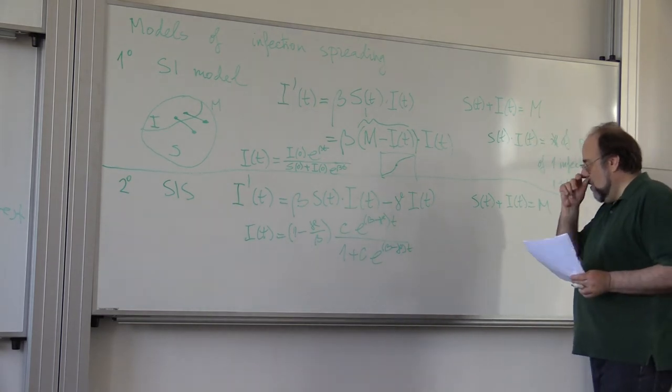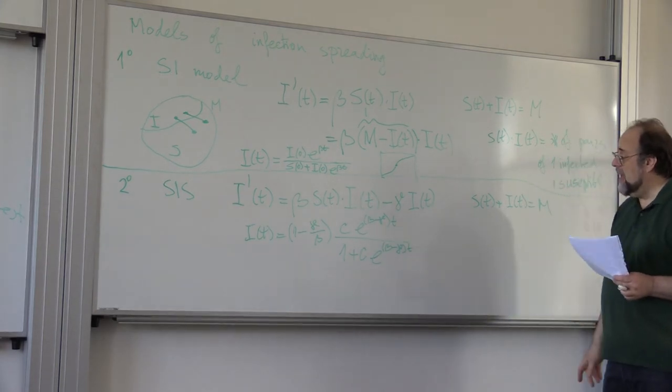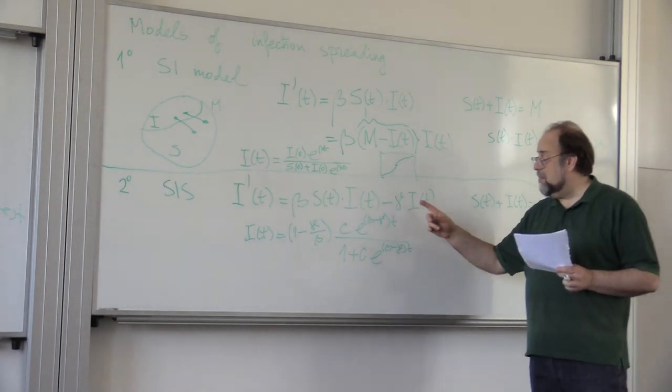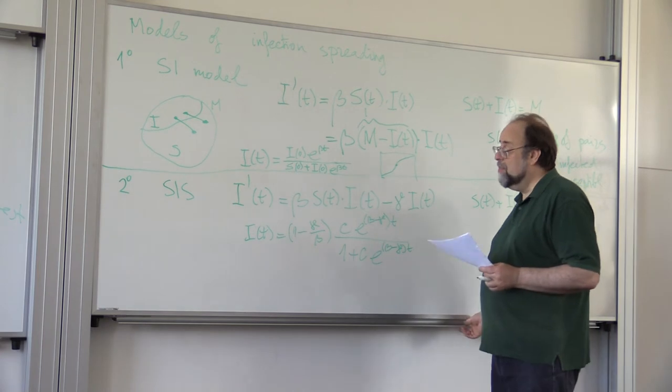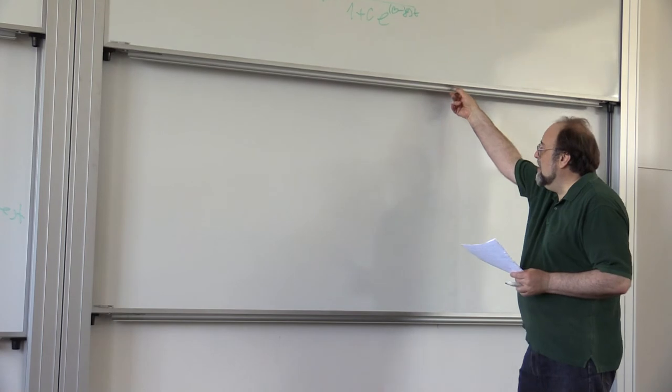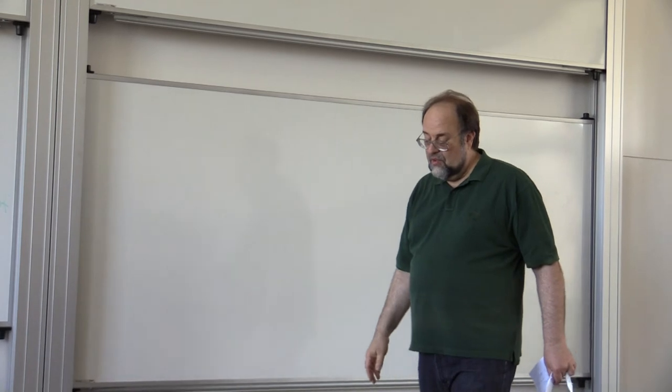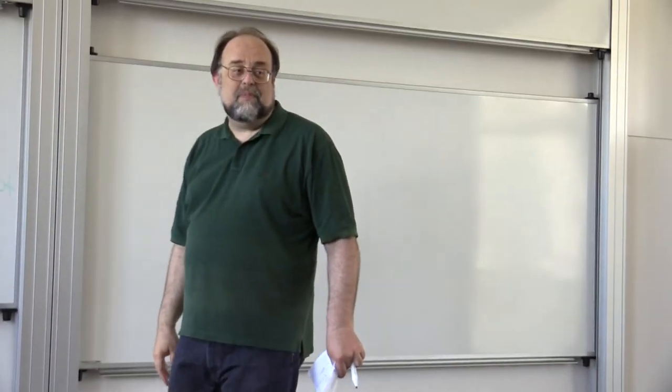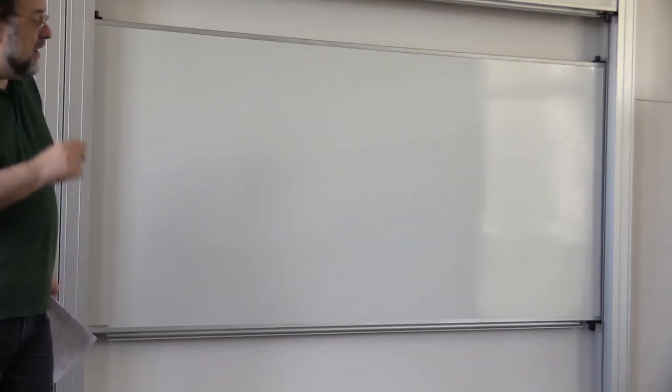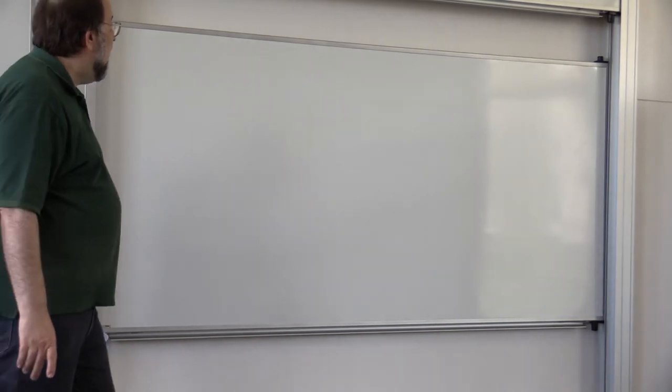Here, the solution is also possible to do explicitly. And we have that this is equal to 1 over gamma divided by beta times C e to the beta minus gamma times t. And here is 1 plus C e to the beta minus gamma times t, where C is a constant that depends on initial conditions. But again, this doesn't include, so it includes recovery, but it doesn't include people who actually become immune.